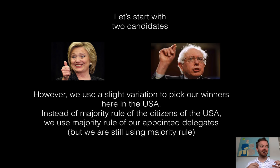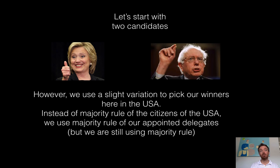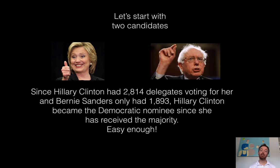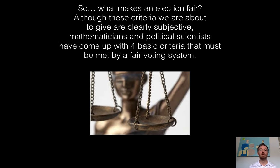It actually turns out that in the USA, we don't just do straight majority rule — we do a variation. It's not based on the popular vote. For example, Hillary Clinton and Bernie Sanders were running to be the Democratic presidential nominee, and they used delegates. For our president, we use the Electoral College. Al Gore lost the presidential election despite winning the popular vote but losing the Electoral College vote. Hillary Clinton ended up with a little over 2,800 delegates; Bernie had almost 1,900. Hillary got the majority, so she became the Democratic nominee.